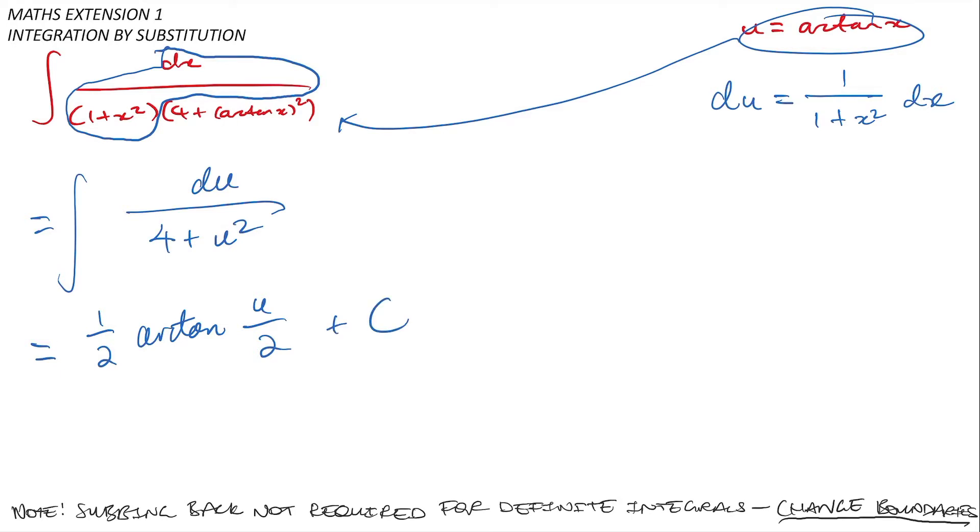But for an indefinite integral I need to finally remember to sub back in for x, so I'll also do that. In my case u was equal to arc tan of x, so I'll get half times the arc tan of the arc tan of x divided by 2 plus c, and then I have my final answer.